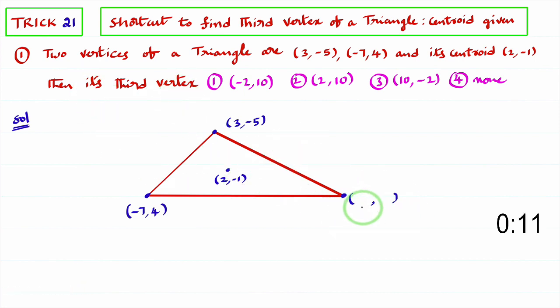To find the x coordinate of third vertex, first you multiply x coordinate of centroid with 3. 3 times 2 is 6 minus sum of these two x coordinates. 3 plus minus 7 is minus 4. So minus of minus is plus, 6 plus 4 is 10. So x coordinate of third vertex is 10.